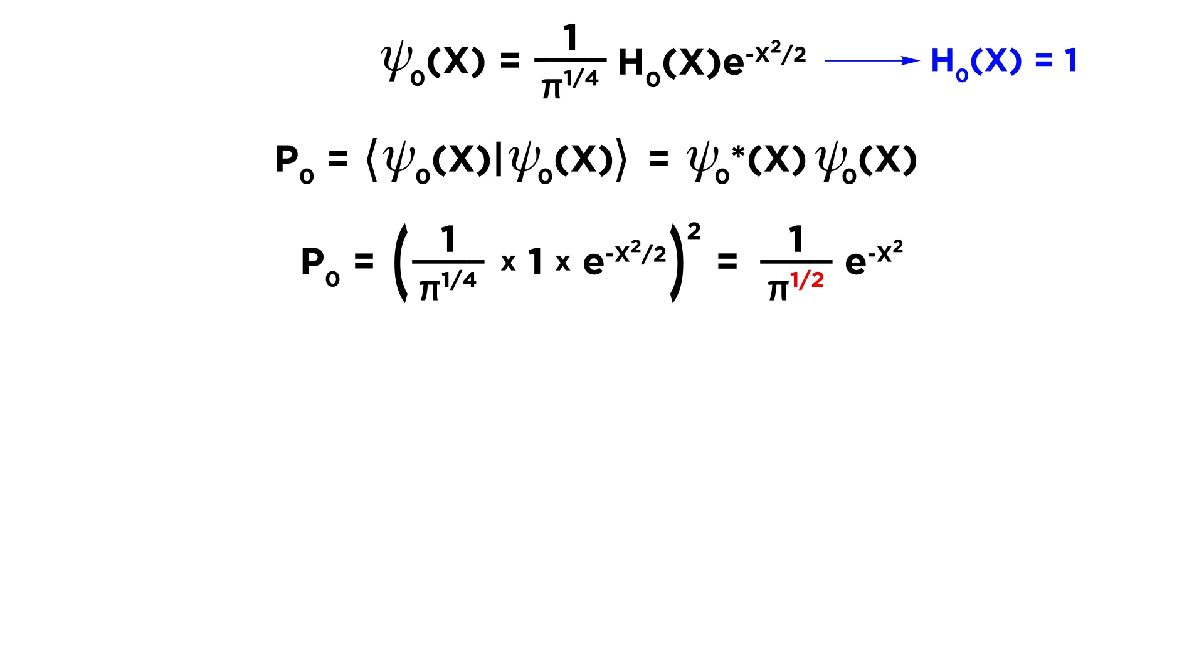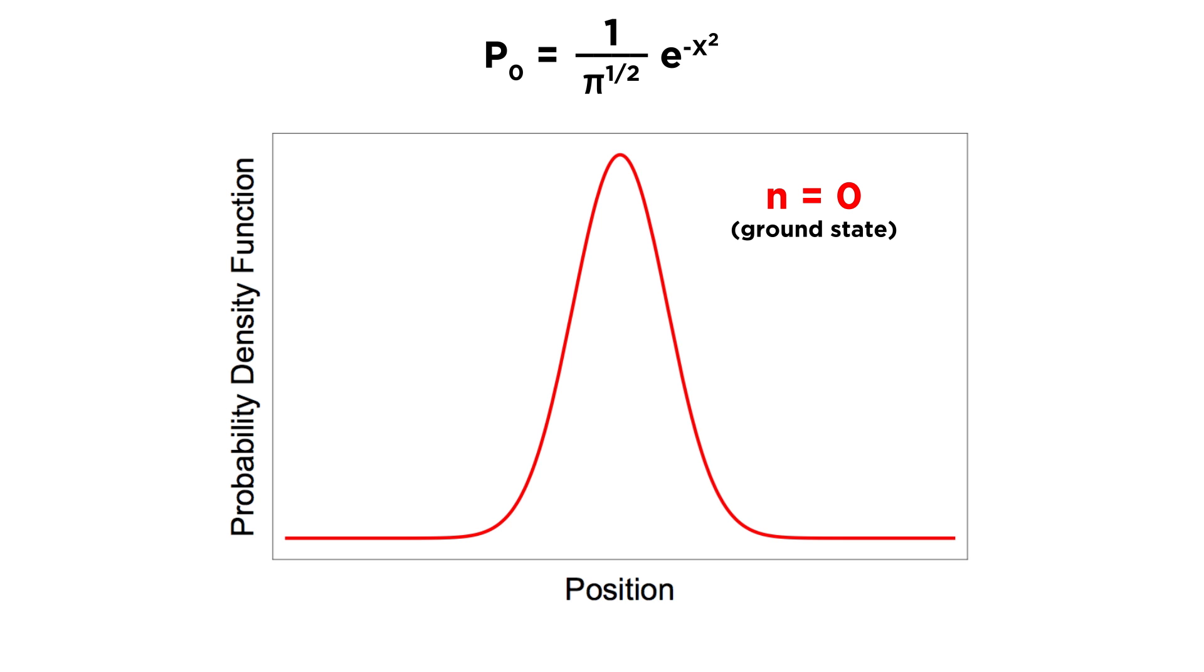That will double this exponent operating on pi, and it will double this exponent operating on e as well, which means we just lose the two in the denominator. Now this will take on the well known bell shape, or Gaussian curve, which we can see quite clearly if we plot position against the probability density function. This is centered around zero, and because there is only one bump, we can call this an odd function.